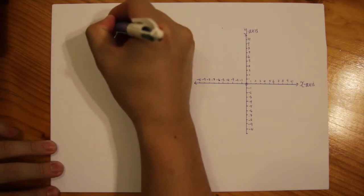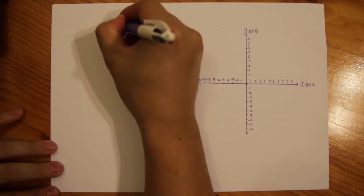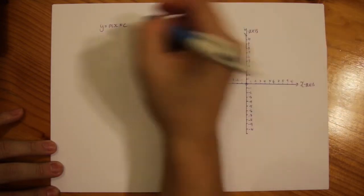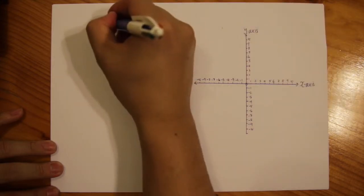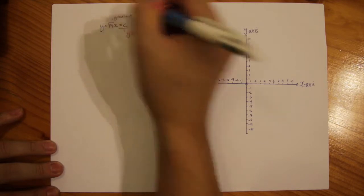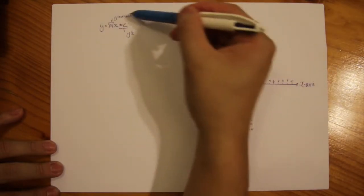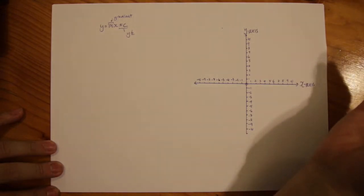Again, recap: the format of a linear rule is y equals mx plus or minus c. C is your y-intercept and m is your gradient. So this gradient intercept method is utilizing these two values, you don't have to do anything further.